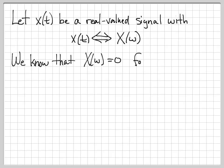And we are told that x of omega is equal to 0 for all frequencies omega greater than or equal to 2,000 pi. So this is just a given of the problem. We're told that the Fourier transform is equal to 0 for omega greater than or equal to 2,000 pi.